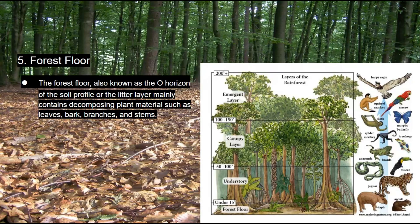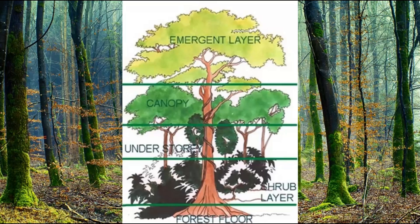Next, we have the forest floor, also called the O-horizon in the soil profile, or the litter layer. We call it the litter layer because this is where we mainly have decomposing plant materials such as leaves, bark, branches, and stems. All of those materials are being decomposed to form the O-horizon, where we have the richest soil — which is where humus is found.